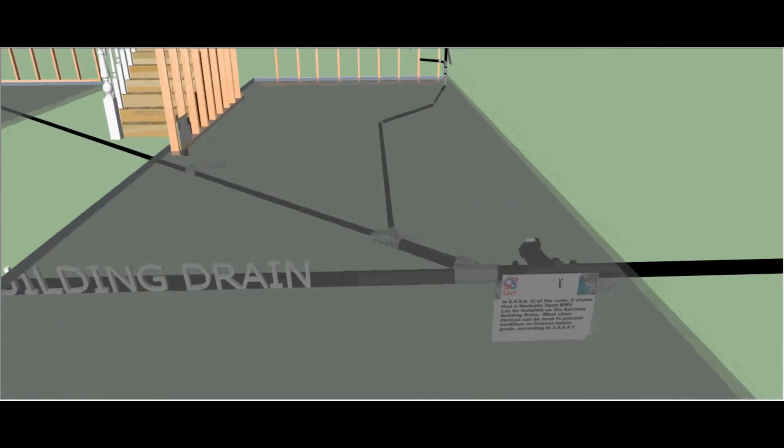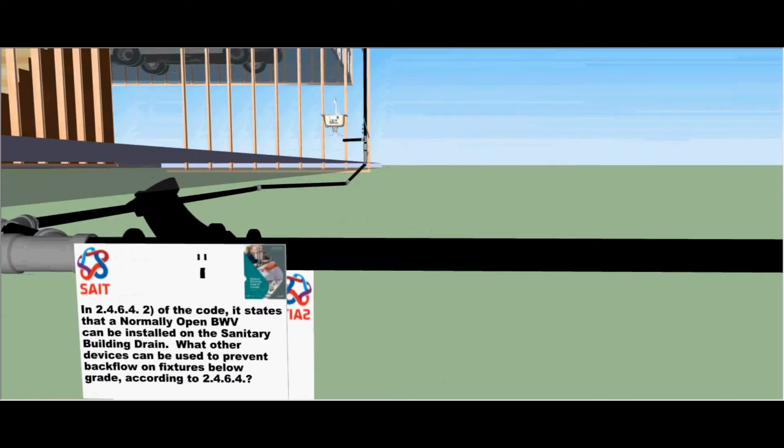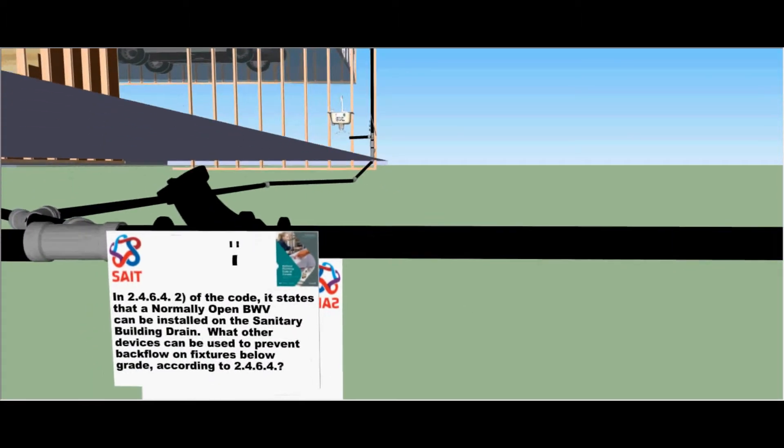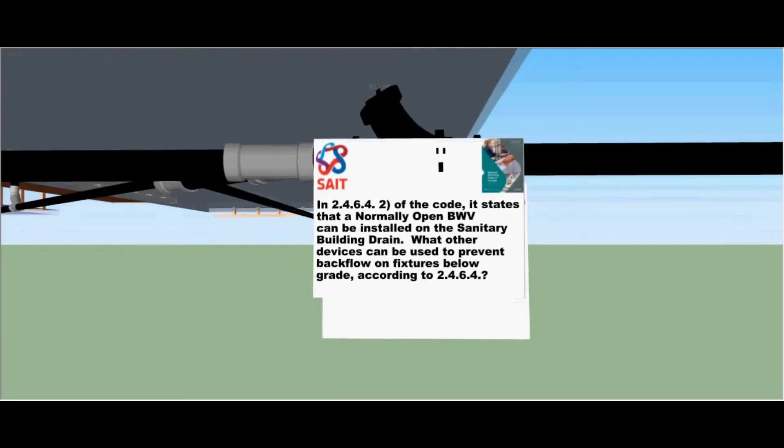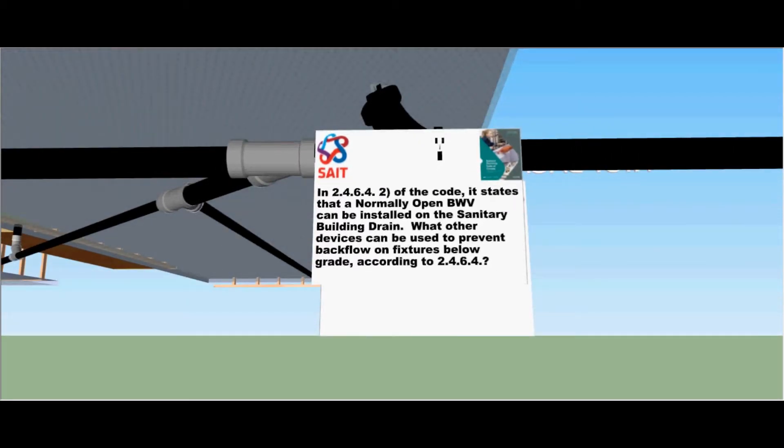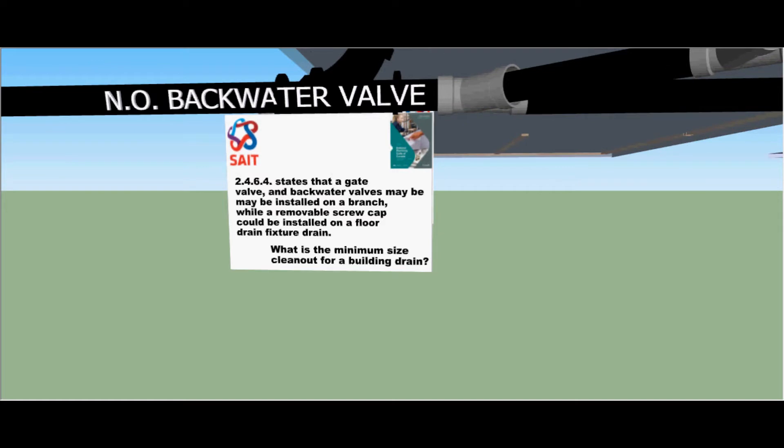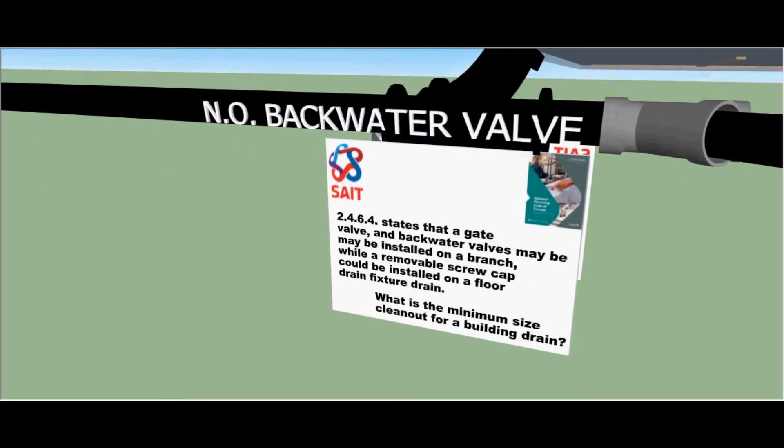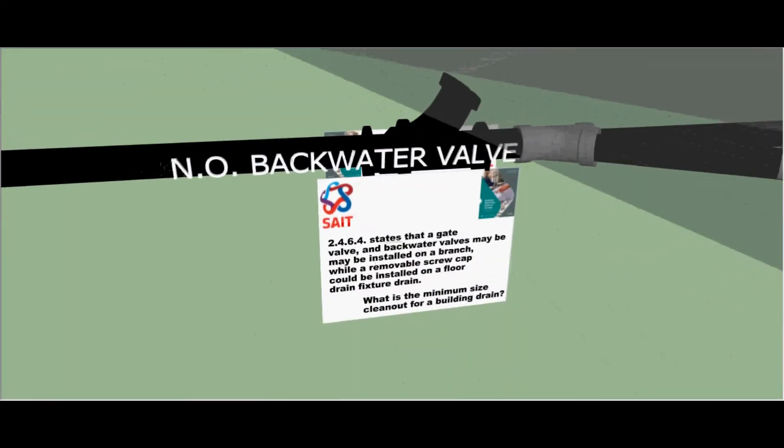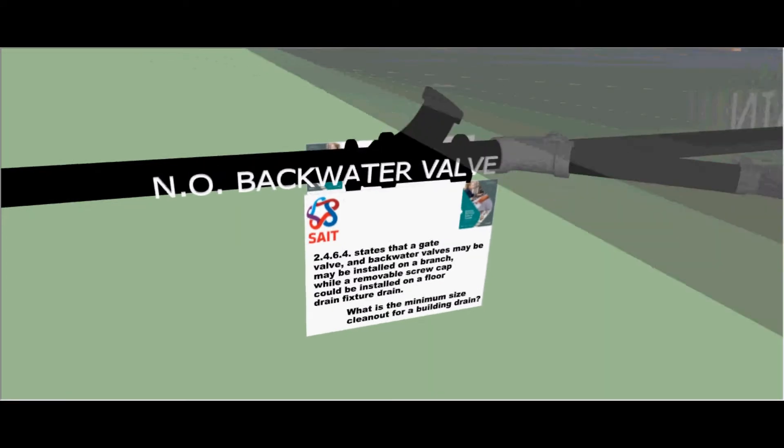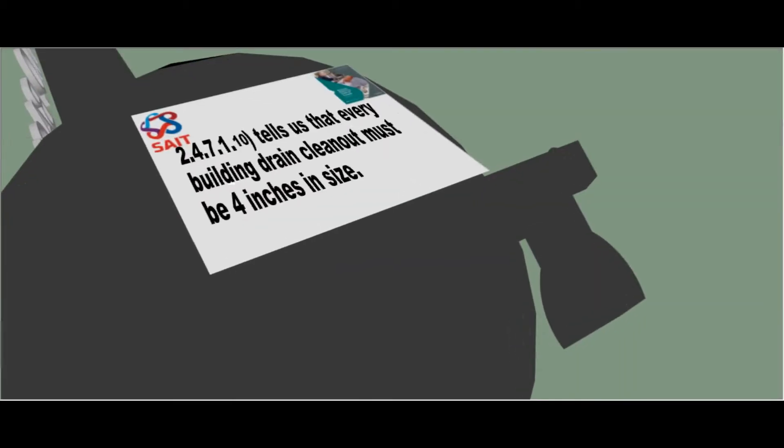Here we see the building drain and the main clean out with a normal backwater valve. It states that this backwater valve can be installed on the sanitary building drain. What other devices can be used to prevent backflow on fixtures below grade according to clause 2464? It states that a gate valve and backwater valves may be installed on a branch while a removable screw cap could be installed on a floor drain fixture drain. What is the minimum size clean out for a building drain? Clause 2471 tells you that every building drain clean out must be at least four inches in size.